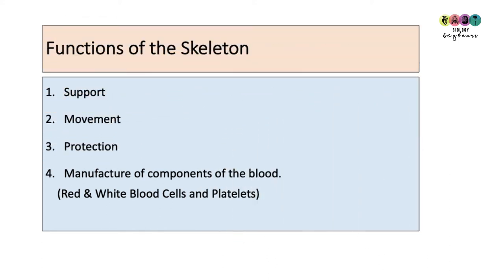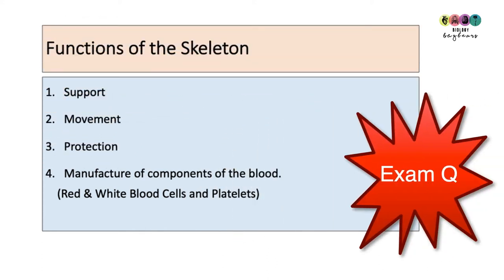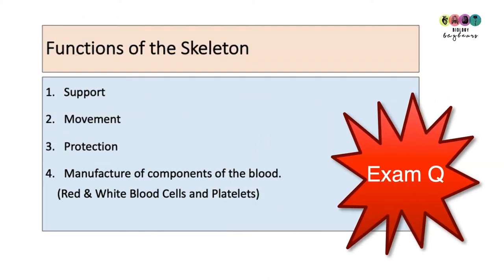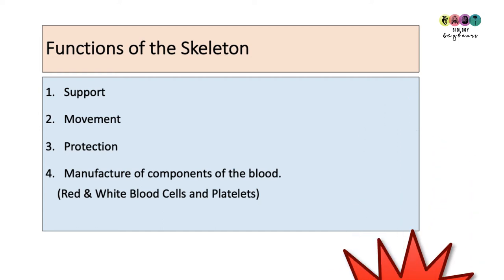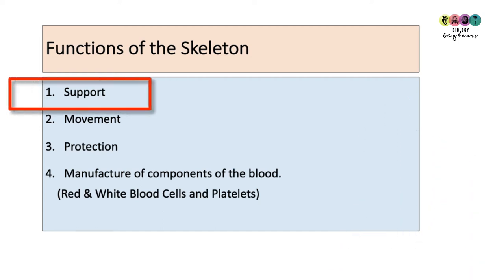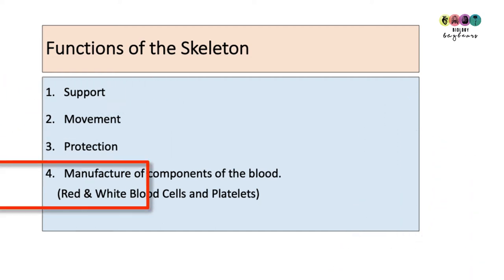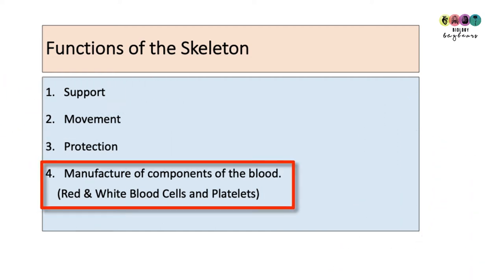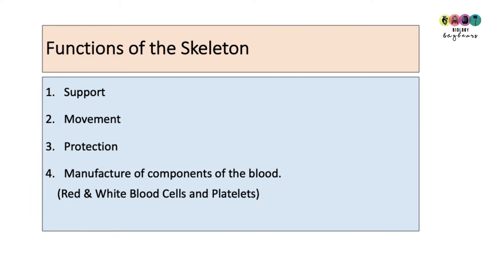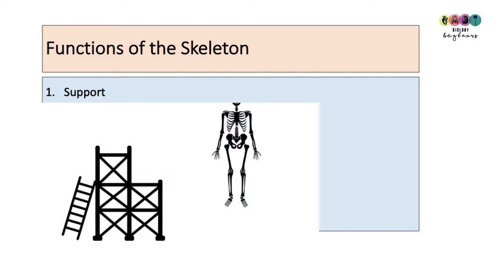What are the functions of the skeleton? This is often asked on exams. The first is support, then there's movement, protection, and finally the manufacture of components of the blood. The red and white blood cells and the platelets are made in the bones of the skeleton.